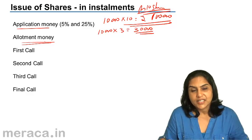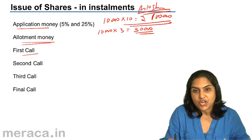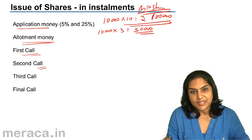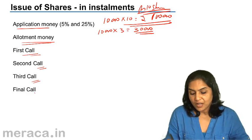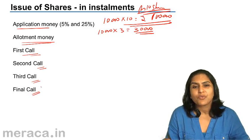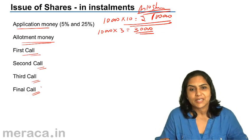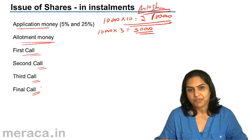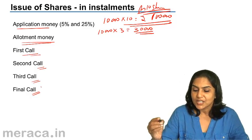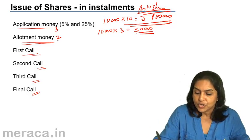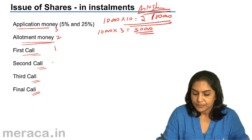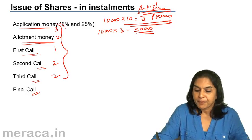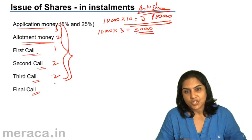The next installment is called the first call, followed by the second call, third call, and final call. Whichever is a final call — it could be the second and final call, the third and final call, or the first and final call. So these installments could be 2, 3, or more. Money could be payable in so many installments.